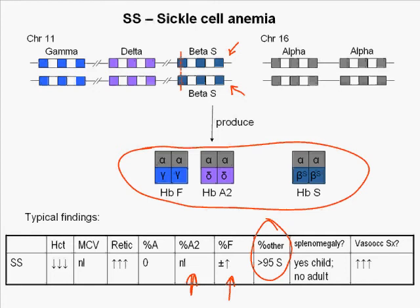The spleen is transiently enlarged in children but not palpable in adults. This is the most severe of all of the sickle cell diseases with the highest rates of vaso-occlusive events. The peripheral smear shows a wide variation in red cell morphology with variable populations of normal looking cells, targets, irreversibly sickled cells, and irregular fragments.